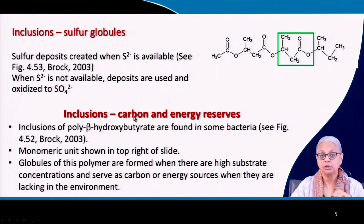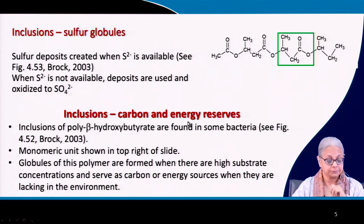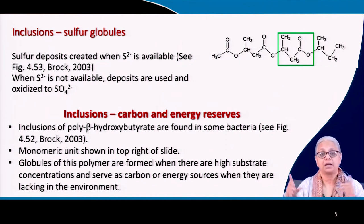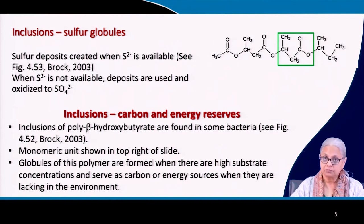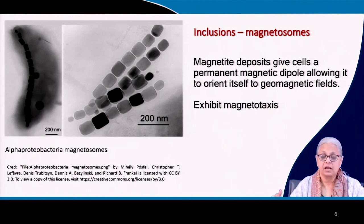There is also another compound for carbon storage: poly-beta-hydroxybutyrate, which is called biodegradable plastic — very popular these days. It serves as a carbon as well as energy source for certain bacteria. Globules of this polymer are formed when the substrate concentration in the environment is high, and this will help the bacteria to survive a famine — meaning nutrient unavailability. When there are insufficient nutrients in the environment, the bacterial cell can utilize these storage granules for both biomass as well as energy.